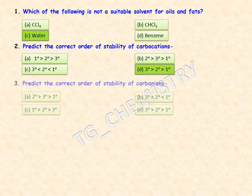The next question is regarding the correct order of stability of carbanions. It is very important to understand and differentiate between carbanion and carbocation stability. The correct answer is option C: 1° > 2° > 3° — the opposite of carbocations.